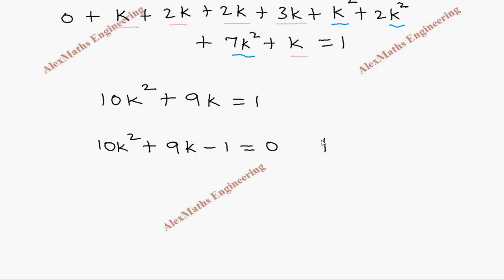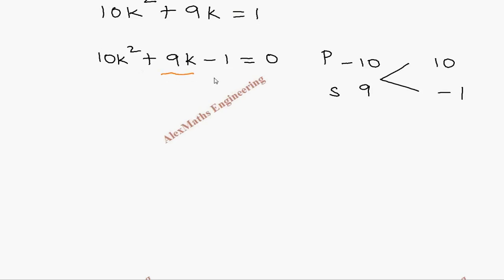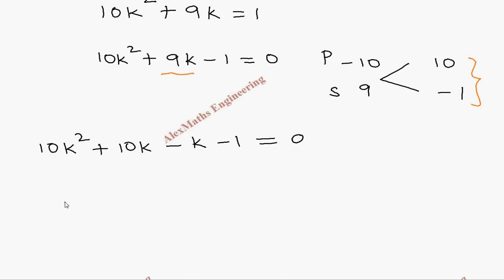The product is minus 10 and the sum is 9, so the numbers are 10 and minus 1. Adding these two gives 9, and multiplying gives minus 10. We split the middle term using these two numbers, giving 10k² plus 10k minus k minus 1 equal to 0.